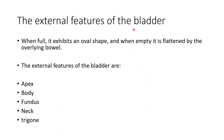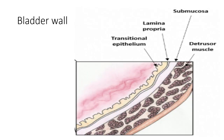The external features of bladder: when full, it exhibits an ovoid shape, and when empty, it is flattened by overlying structures. Describe the external features in terms of apex, body, fundus, neck, and trigone. Next, draw the picture of the bladder wall, which consists of transitional epithelium, lamina propria, submucosa, and detrusor muscle. Describe each of these layers in your answer.